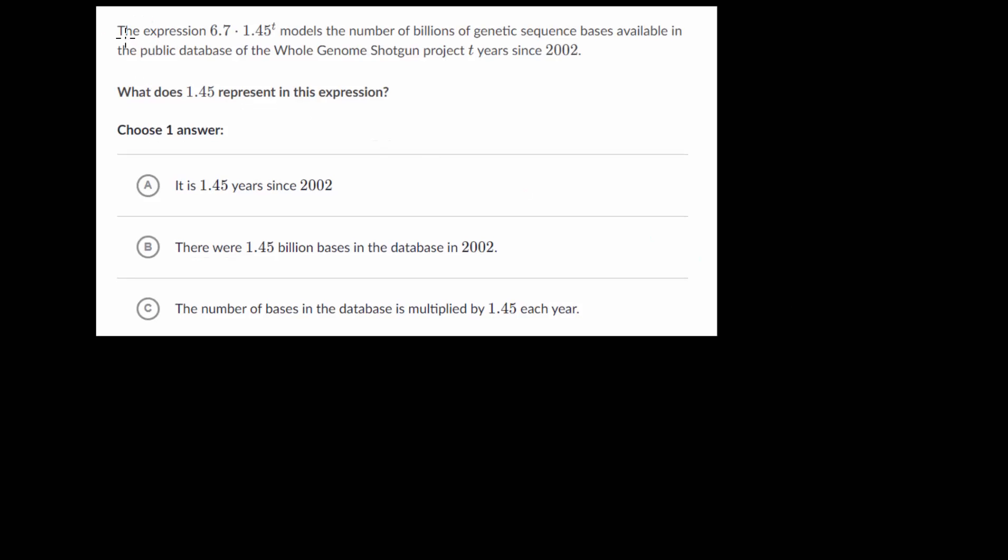We have that the expression 6.7 multiplied by 1.45 to the t models the number of billions of genetic sequence bases available in the public database of the whole genome shotgun project t years since 2002. So what does 1.45 represent in this expression? Let's compare this to our general formula. We have a multiplied by b to the t, and we know a is our starting value, and in this case that's the number out front, that's 6.7.